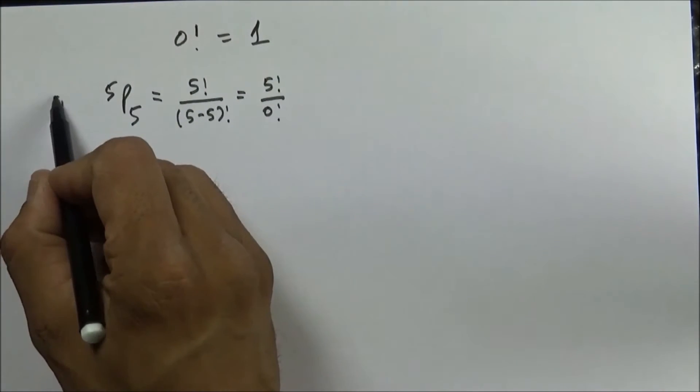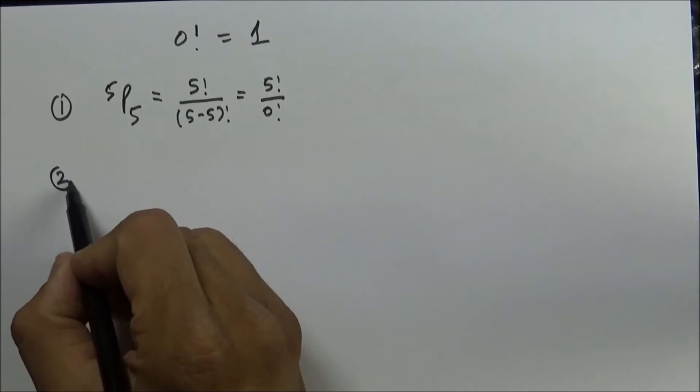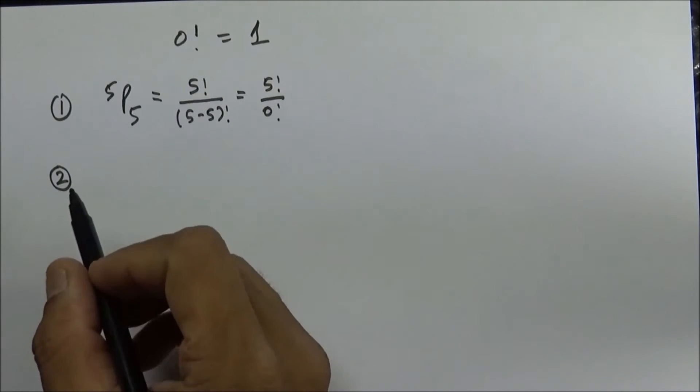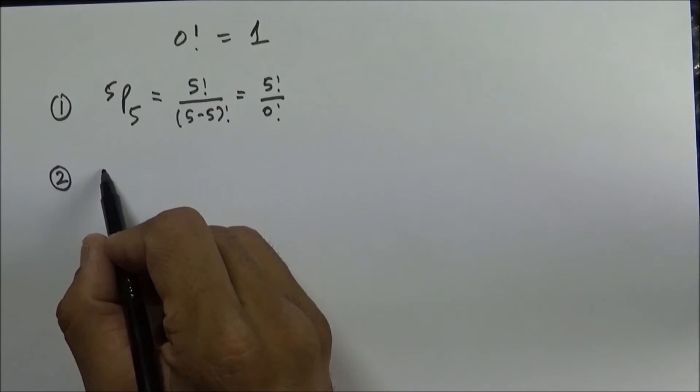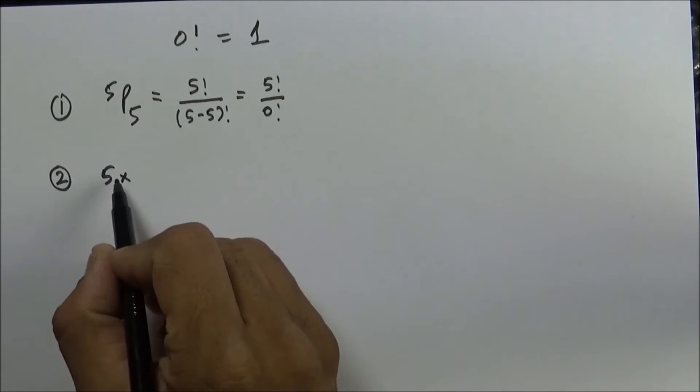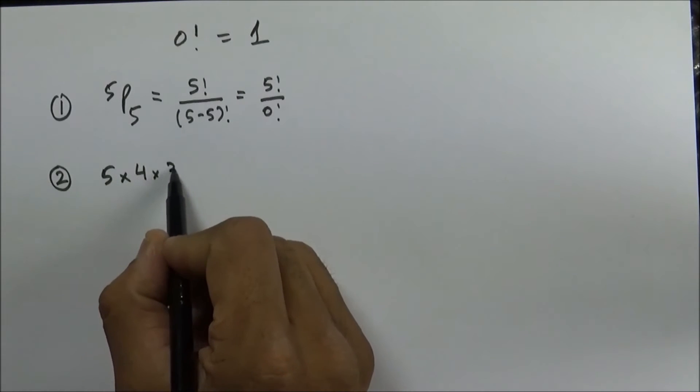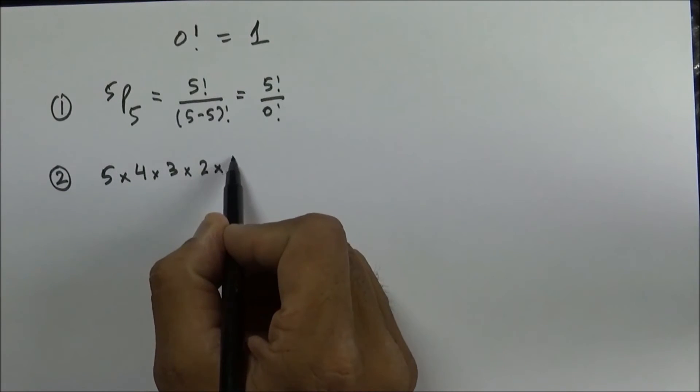Now we can use the fundamental method of counting for the same question, and the number of arrangements will be first place by any of the five people, then 4, then 3, then 2, and finally 1.